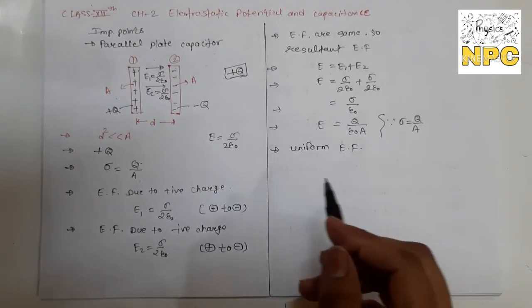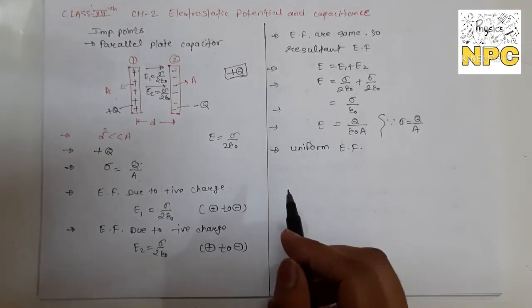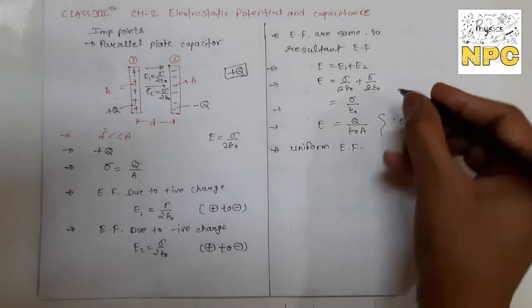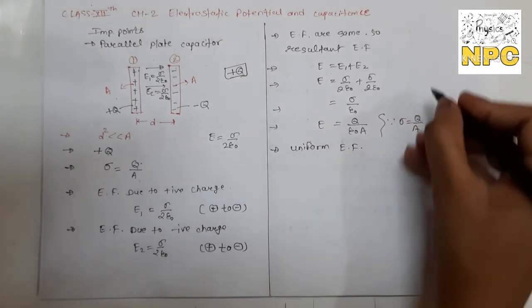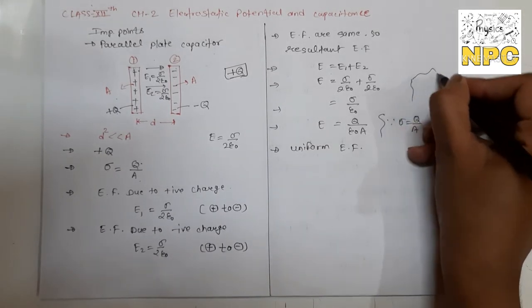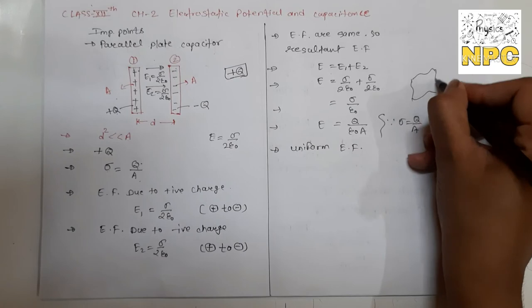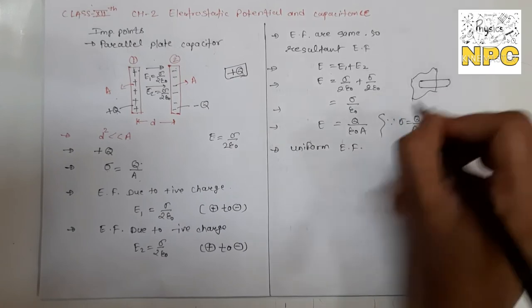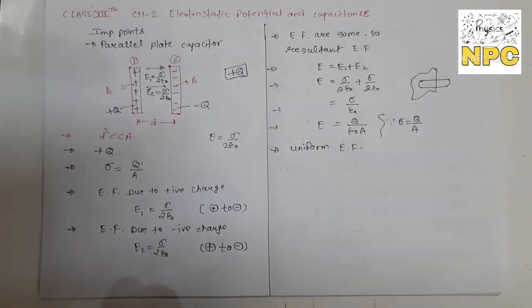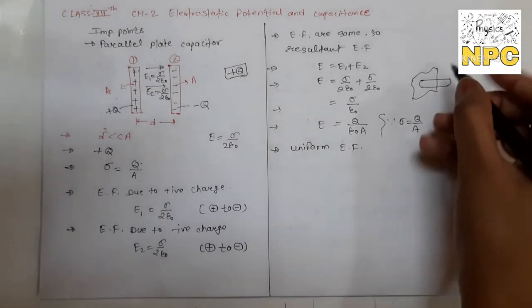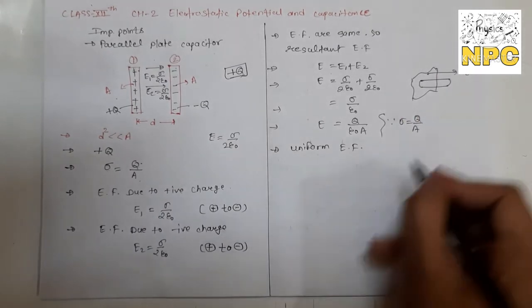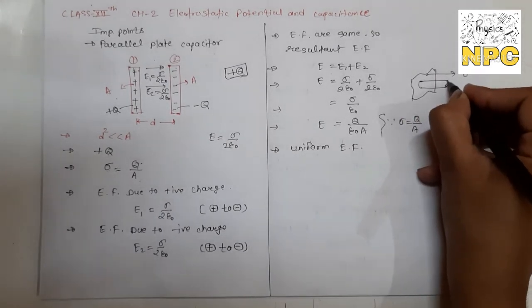Now using V = E·d and E = Q/(ε₀ A), we get V = Q·d/(ε₀·A). The capacitance formula from the last lecture is C = Q/V. Substituting the value of V, we get C = Q / [Q·d/(ε₀·A)], so Q cancels out.